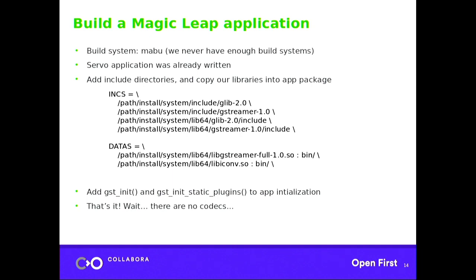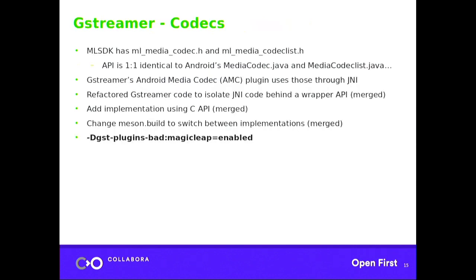In your main application you just call gst_init() and the new function gst_init_static_plugins(), which is implemented inside the libgstreamer-full shared library. With that, you can already run GStreamer on the device — but you have no codecs yet.